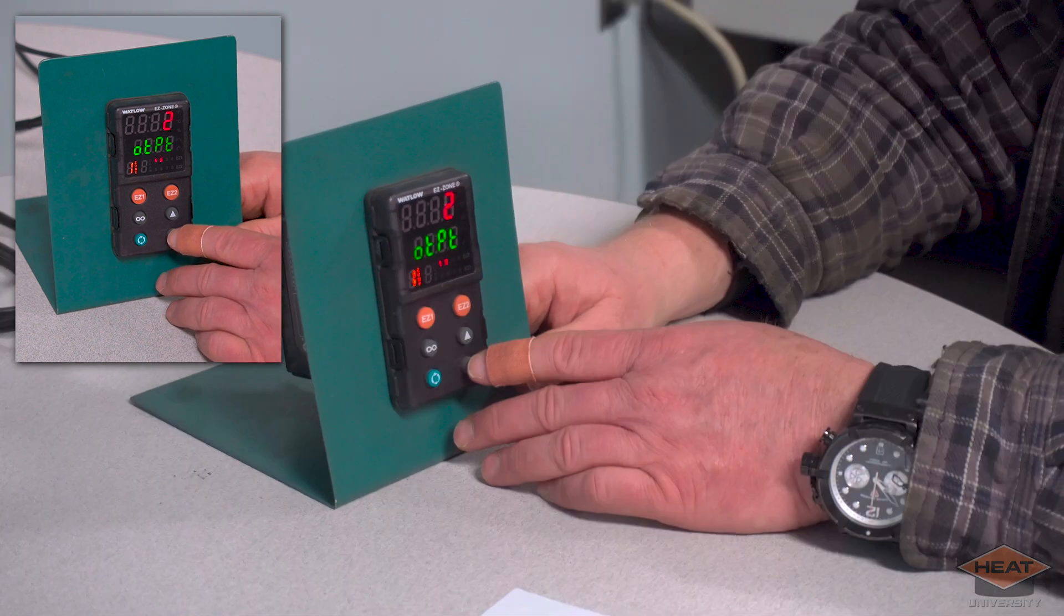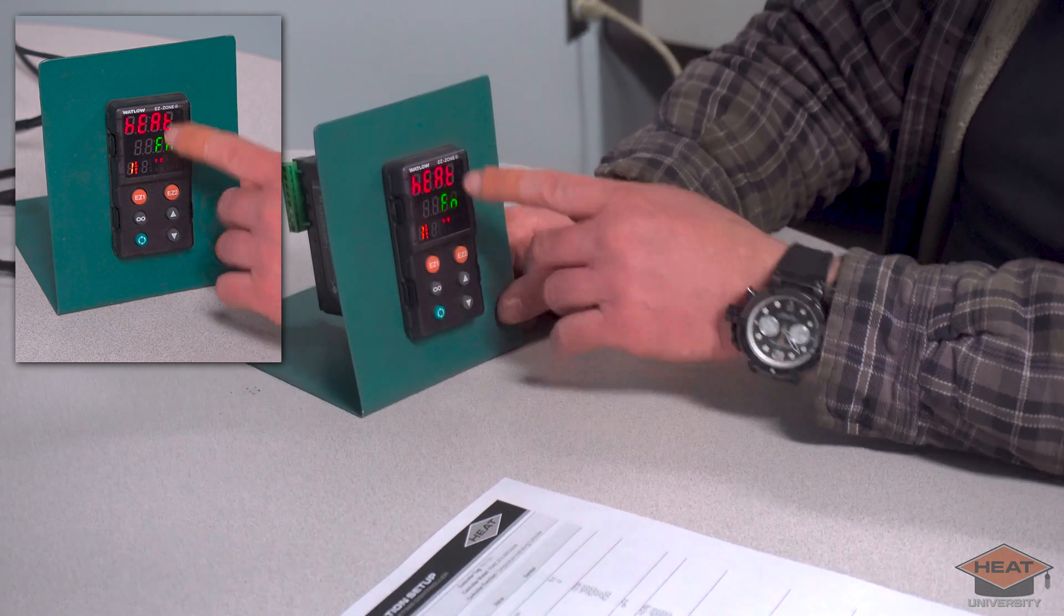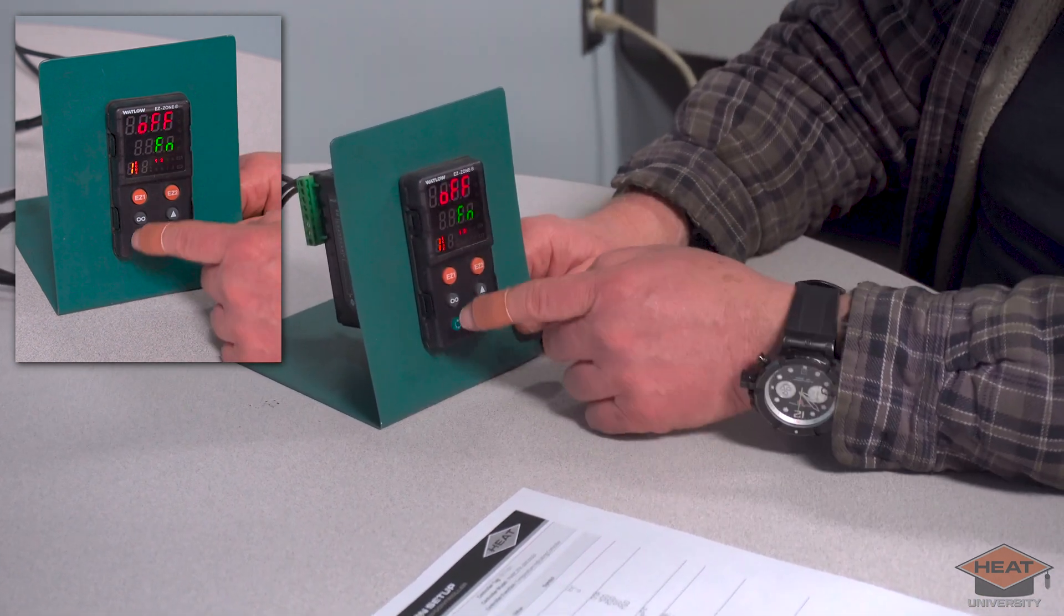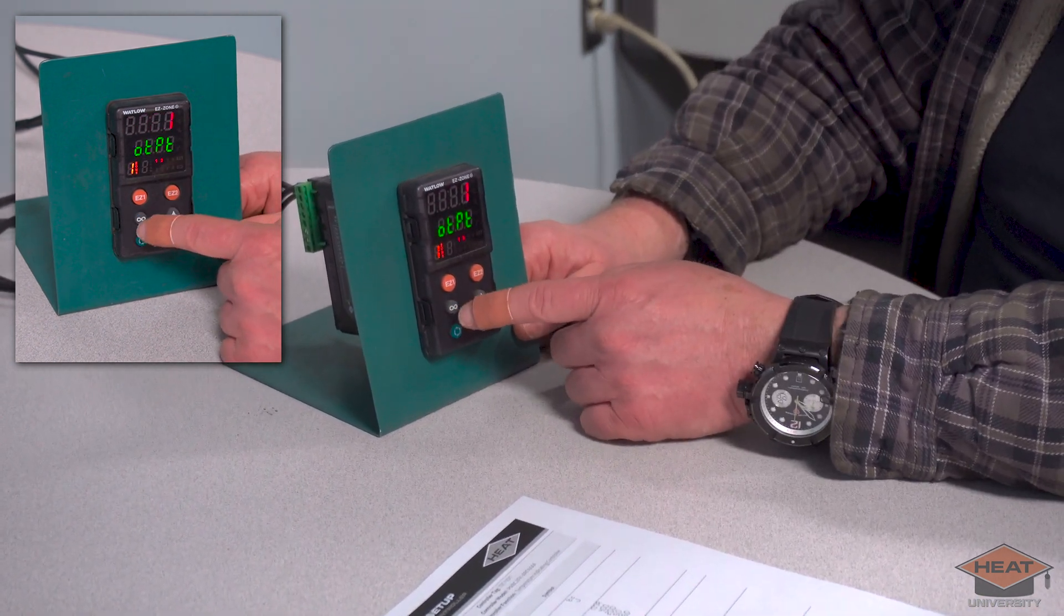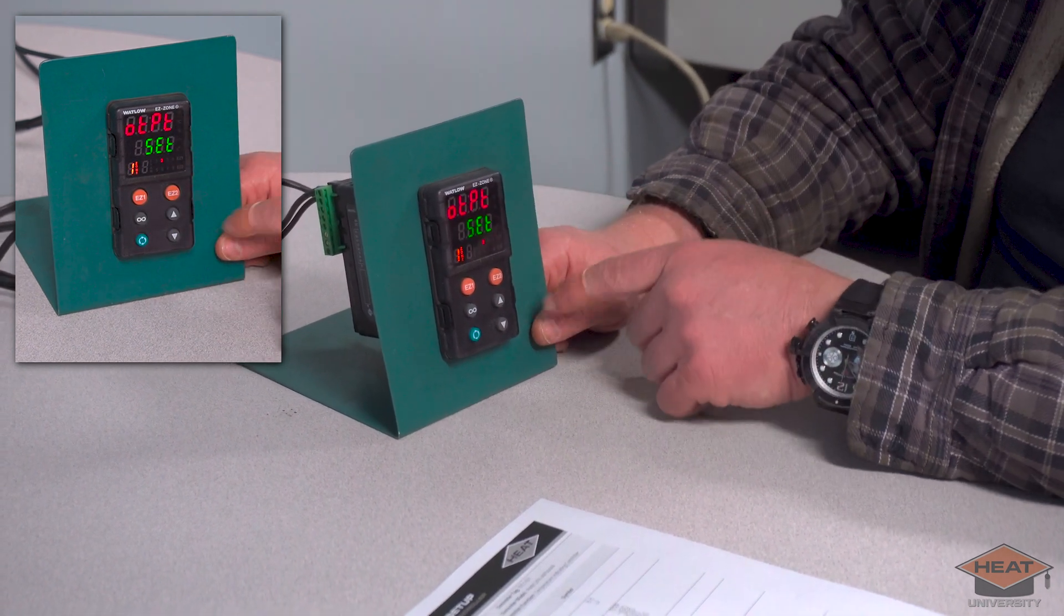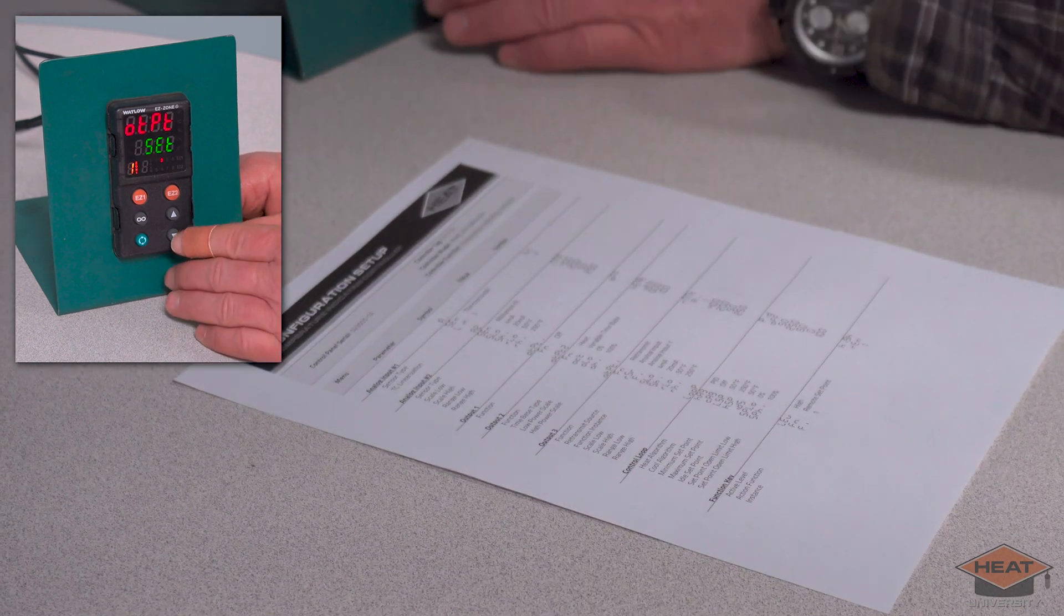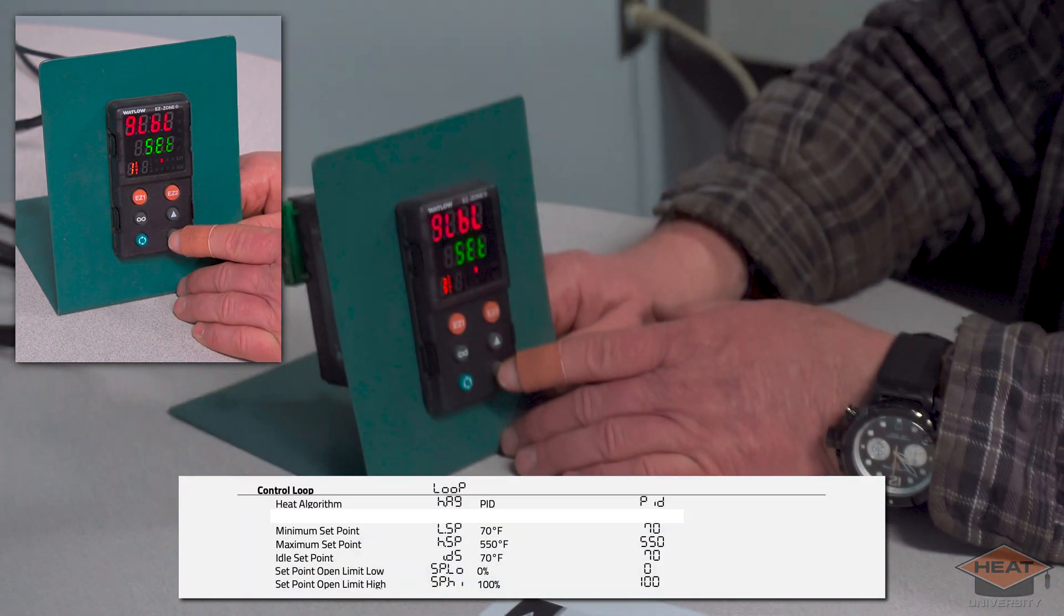So we're just going to change this to that variable time base, and then we'll just hit the infinity button again and back out to output two. Now we didn't do anything with output one, but what we could do is it comes up as heat. We could turn that off. Now we're going to go back, hit infinity until we're back at output.